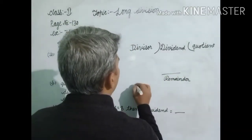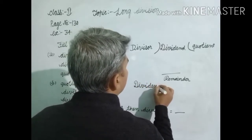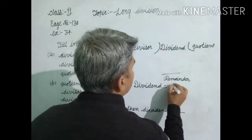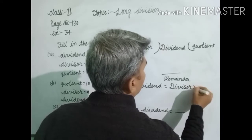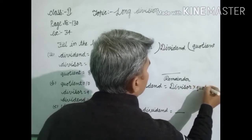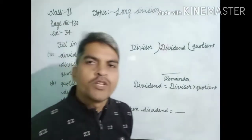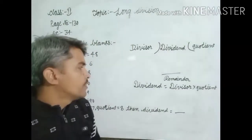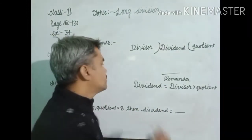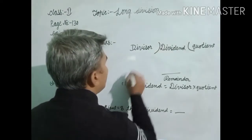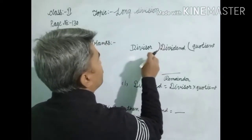Dear students, one formula is: dividend is equal to divisor times quotient plus remainder. Dividend is equal to divisor times quotient plus remainder. But here, dividend is equal to divisor multiplied by quotient. So dear students, this formula must be remembered. These are the specific names of the proper digits.